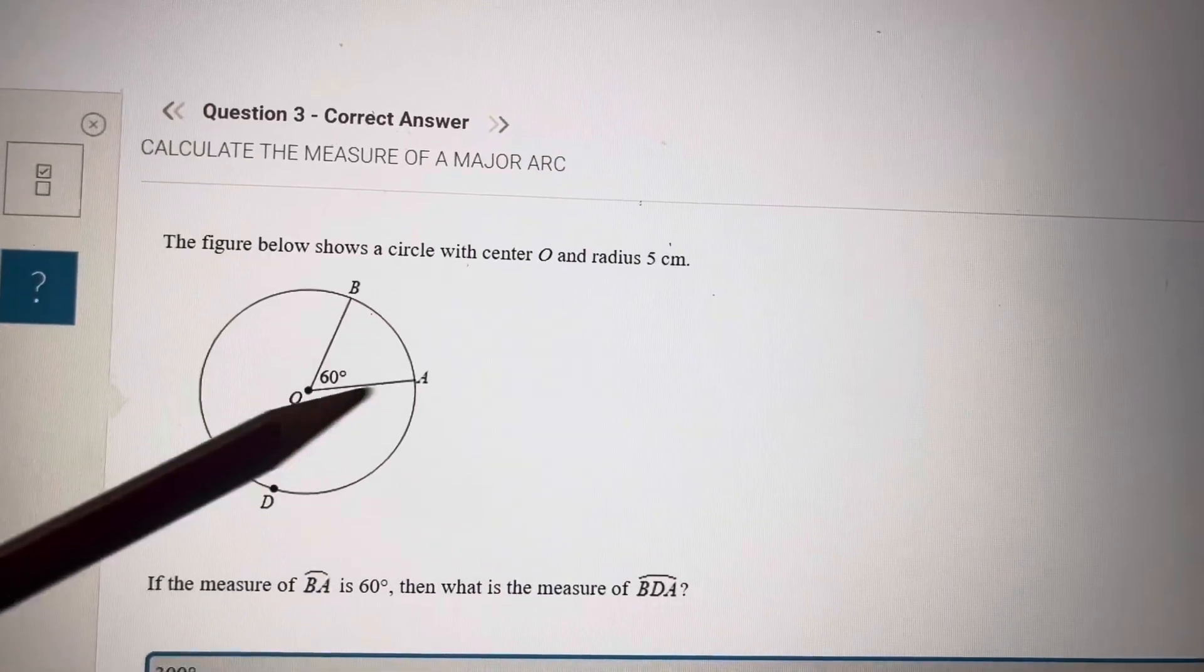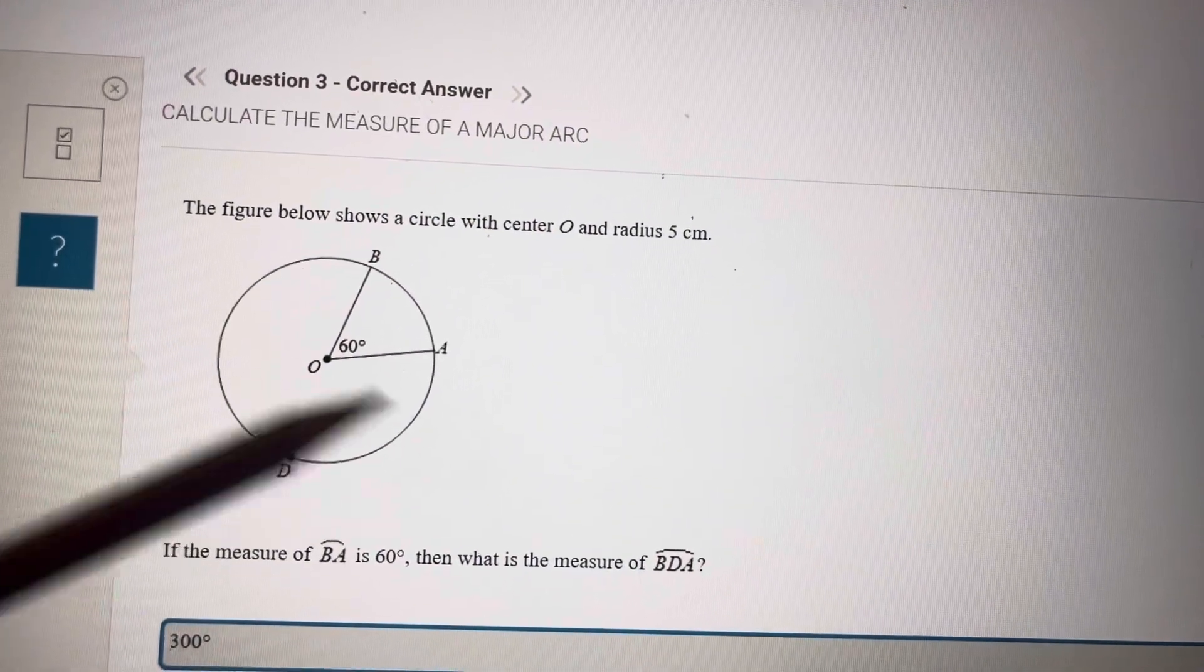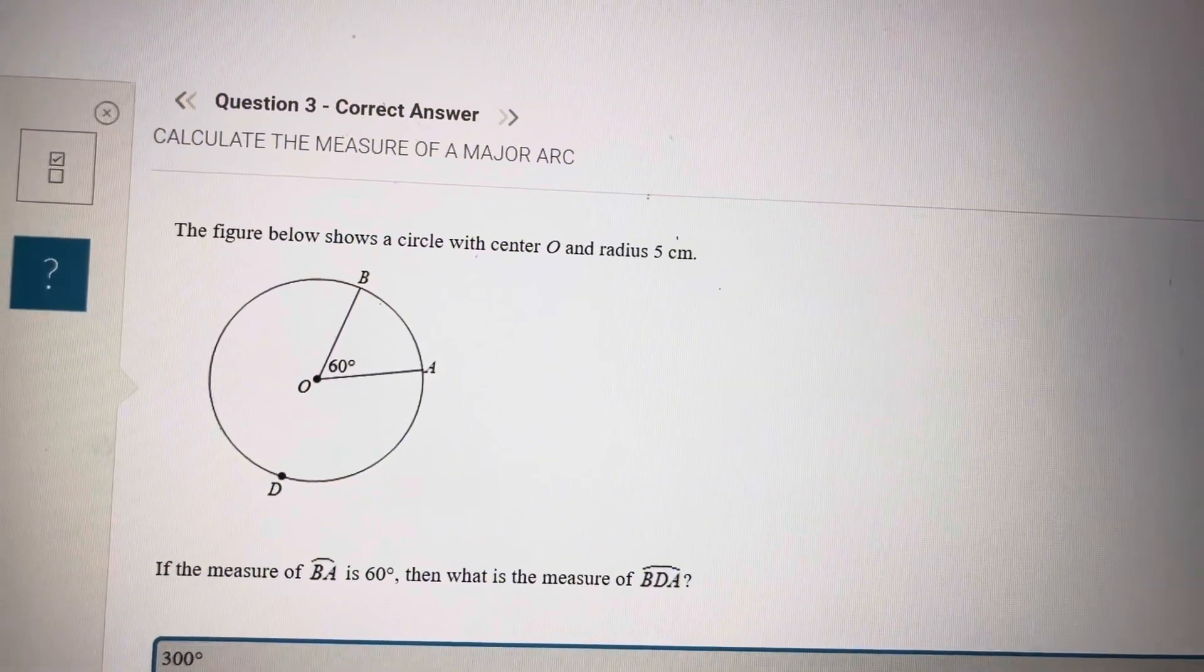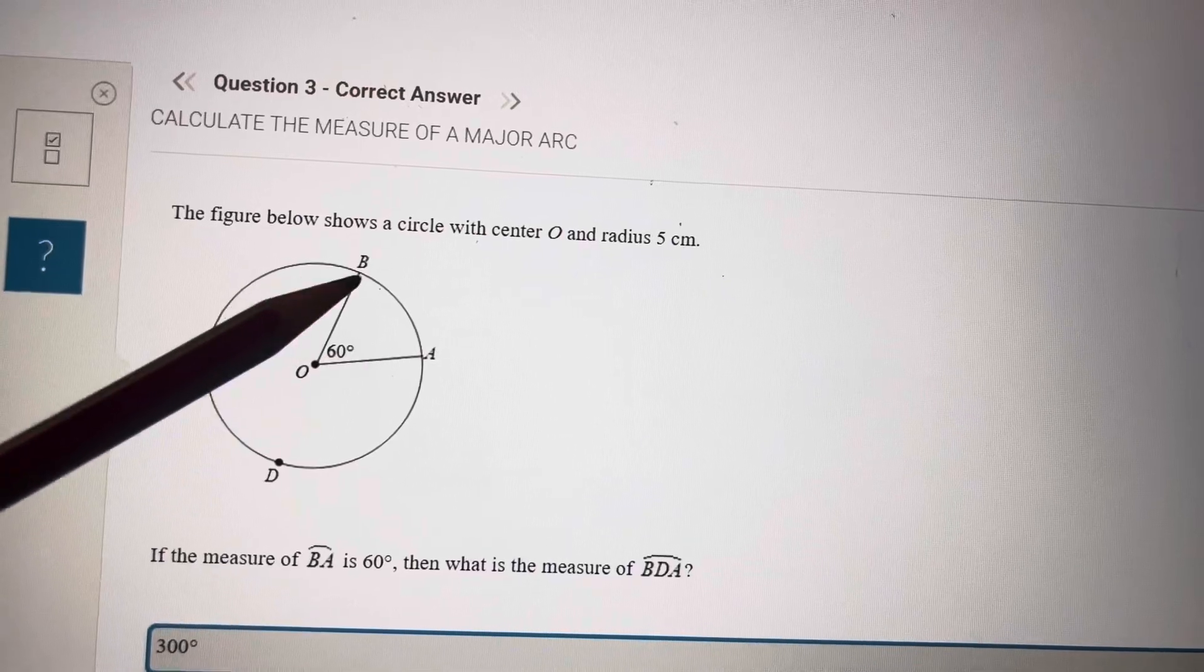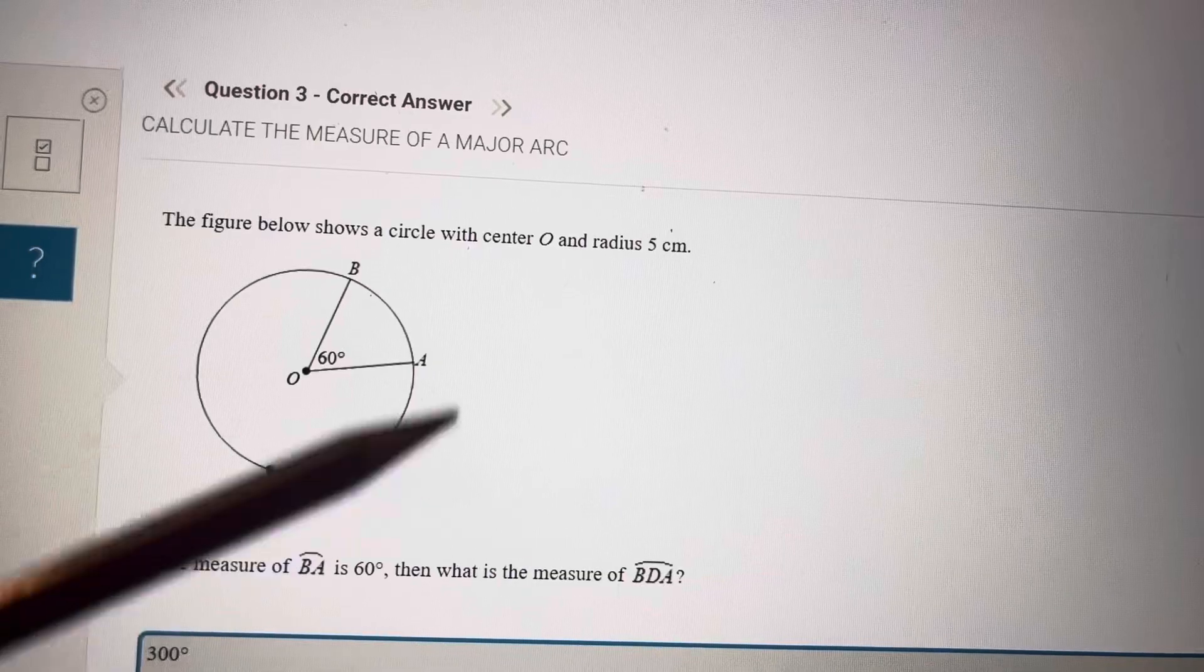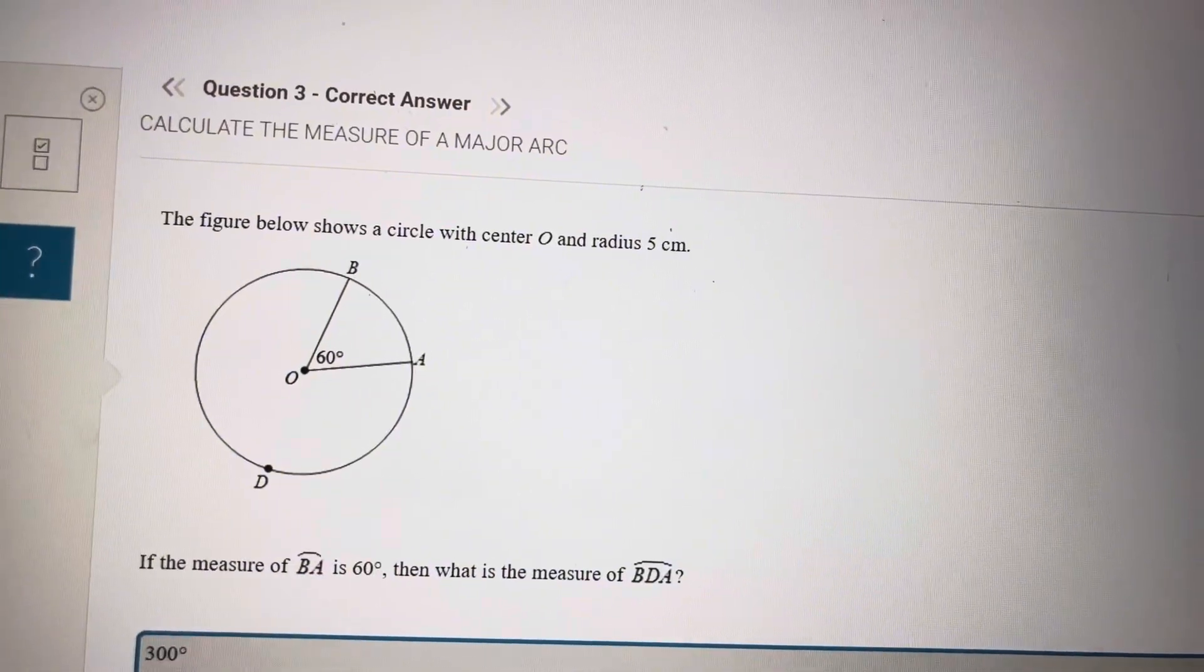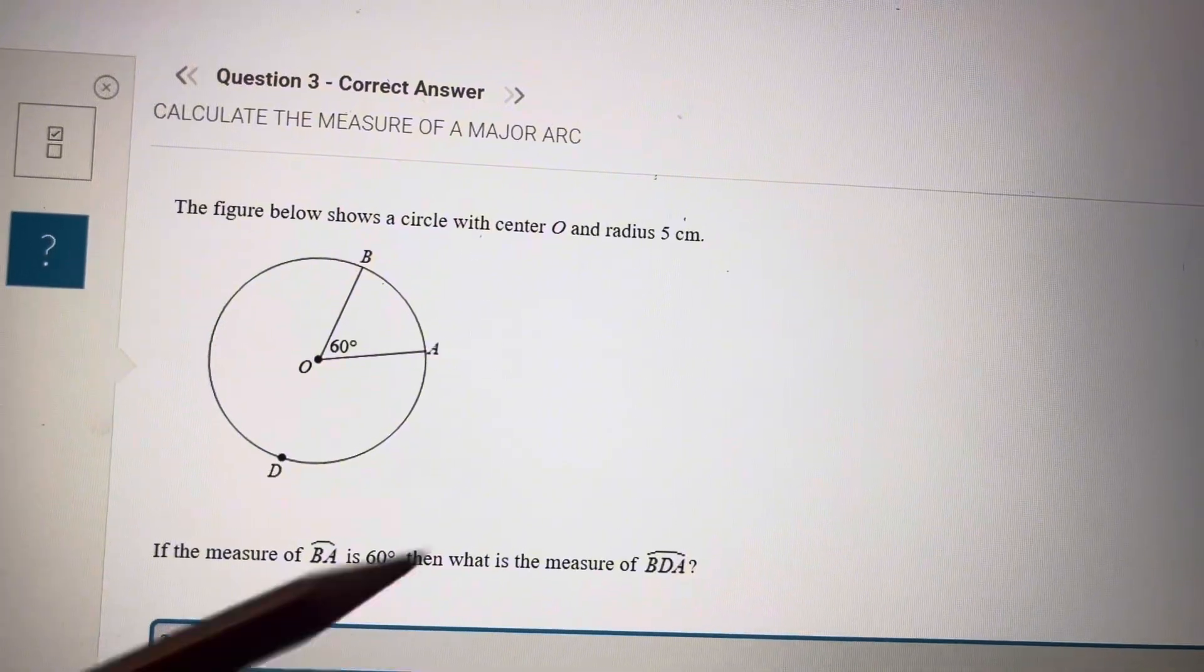It's giving BA is 60, this angle BOA is 60, or the arc is 60, because the arc of the central angle is equal to the central angle. So this is 60, this also will be 60. What is the measure of BDA? He wants the rest. The whole circle is 360 minus 60, so 300. So BDA is 300.